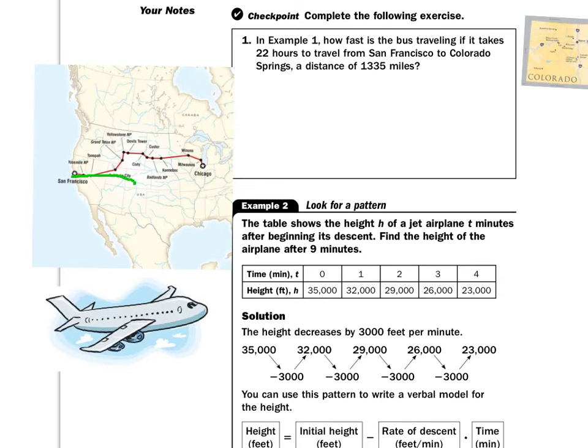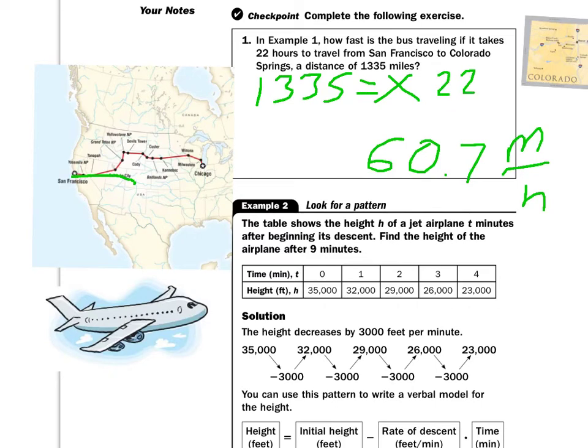Well, so hopefully you were able to figure out that it takes about, you traveled about 60.7 miles per hour. Okay. Don't forget, your total distance was 1335. And that would equal x, how fast you traveled, times 22. And so you just divided both sides by 22. Hopefully you got that.